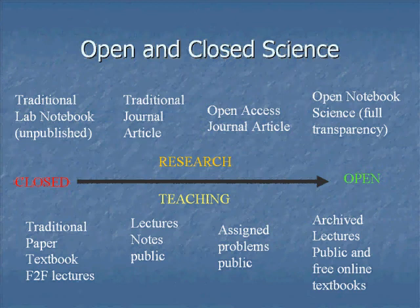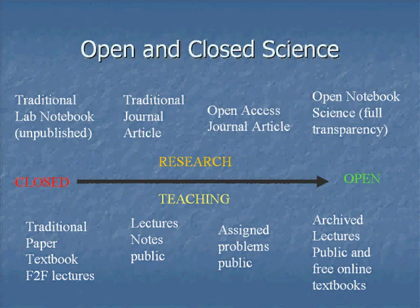There's been a trend in the past few years to go from more closed systems in research and in teaching to more open systems. We're all familiar with the traditional lab notebook, where all the stuff in there is not going to become public unless somebody actually puts it together and writes a paper. The traditional journal article is more open, but people have to pay to get access to the information. Recently, open access has become popular — the advantage is that people don't have to pay to access the articles, but the format is still the same as the traditional journal.